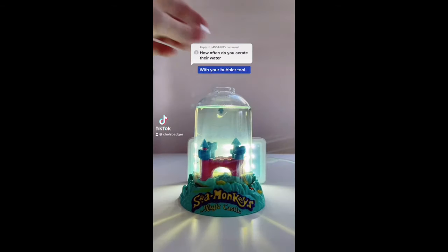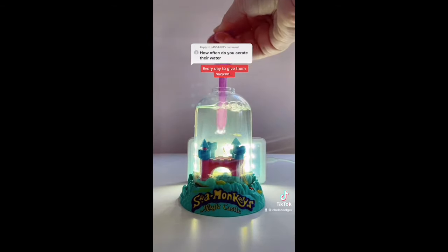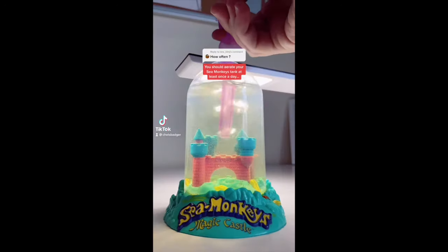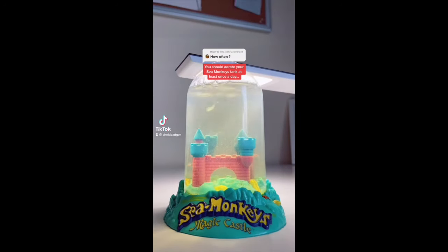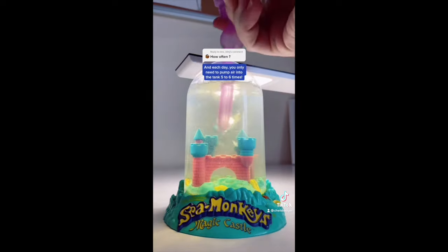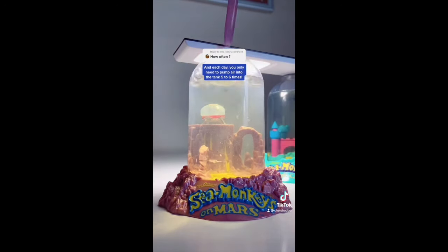It's best to aerate your sea monkeys tank with your bubbler tool every day to give them oxygen. However, if you skip a day this is also fine. You should aerate your sea monkeys tank at least once a day and each day you only need to pump air into the tank five to six times.